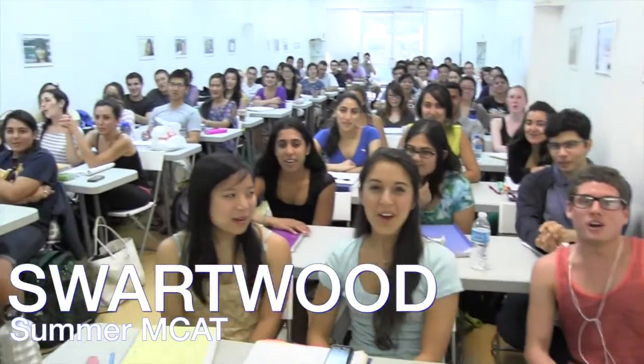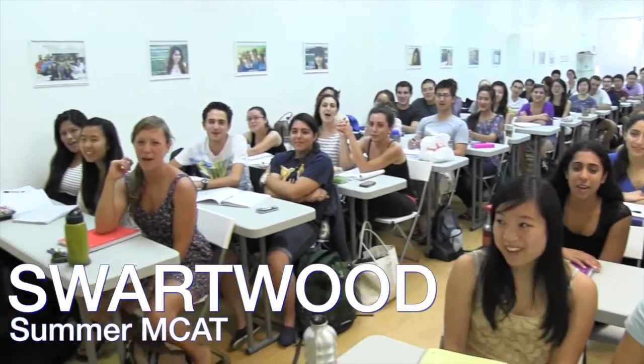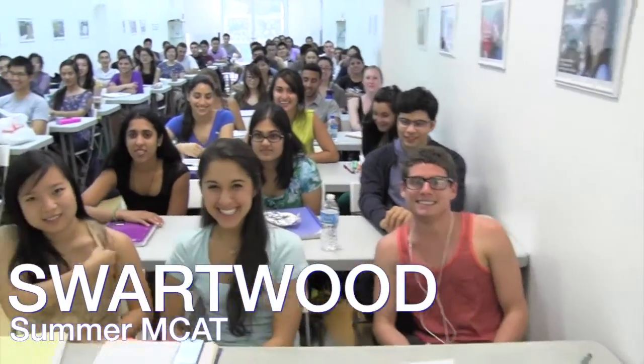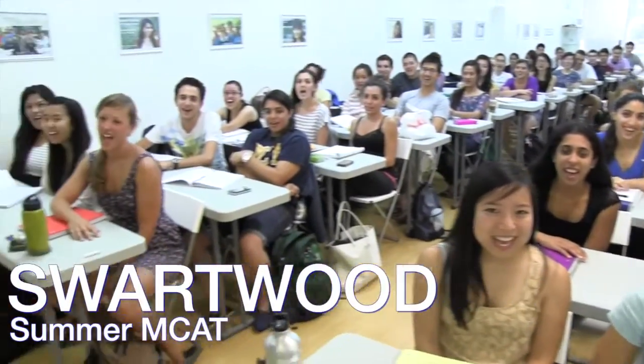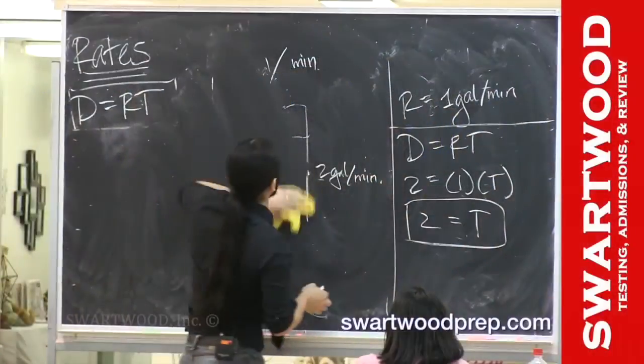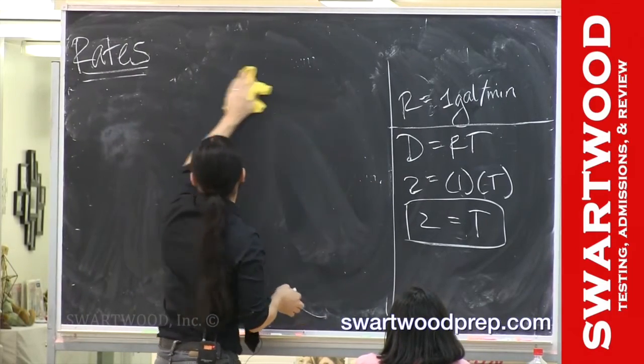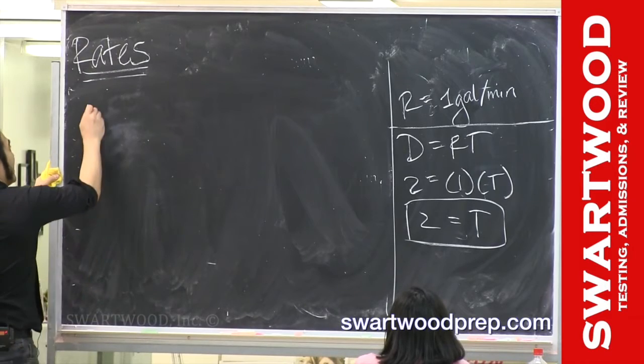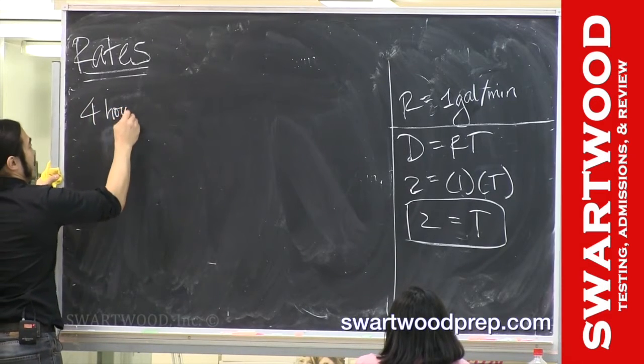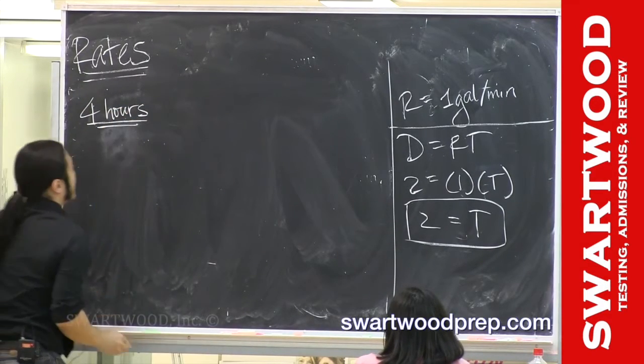So you guys are real sport with MCAT students. I mean, this is the work thing. So let's do a first mellow version of this. It takes Jen four hours to build a fence.